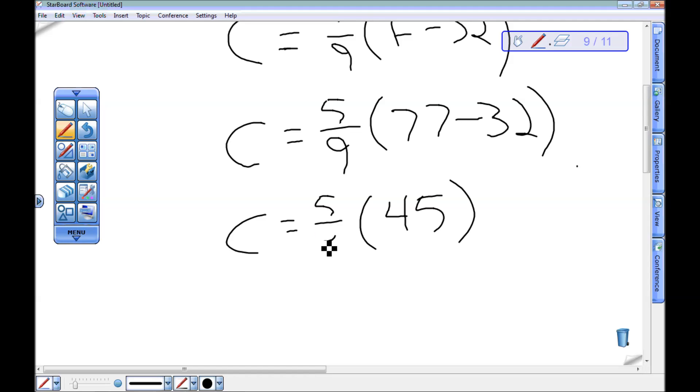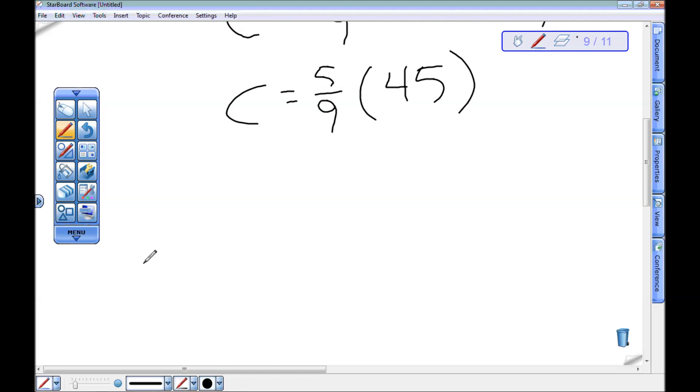I better not change what this was—it was five ninths. There we go. Now I want five ninths times 45. I can either take out my calculator, which will do this for me great, or I can remember that 45 is the same as 45 firsts.